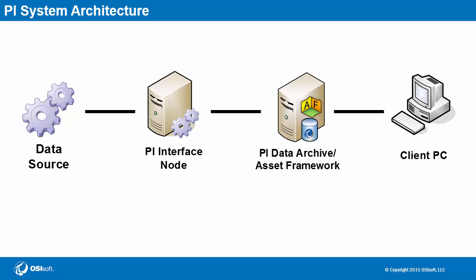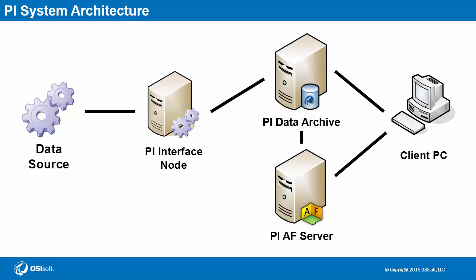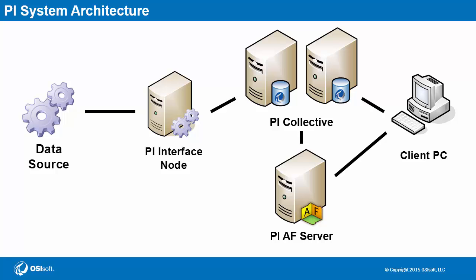So we'll start here. The PI data archive and the PI AF server are both on the same machine. Assuming that the number of PI points is expected to increase, let's place the PI data archive separate on its own computer. Let's also assume that the data in the PI data archive is vital and must be made highly available for users in the organization. This calls for a PI collective, consisting of multiple PI data archives. This highly available design allows for independent storages of the same time series data.